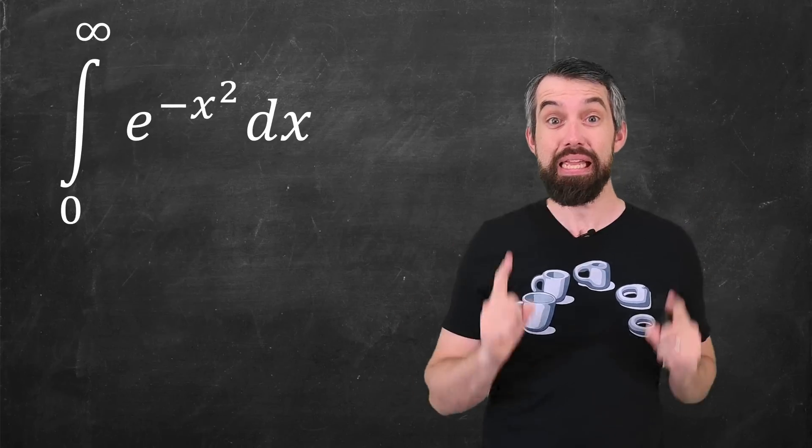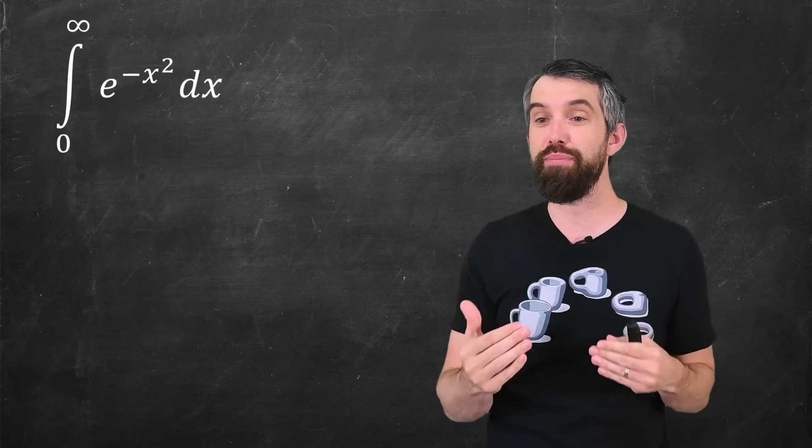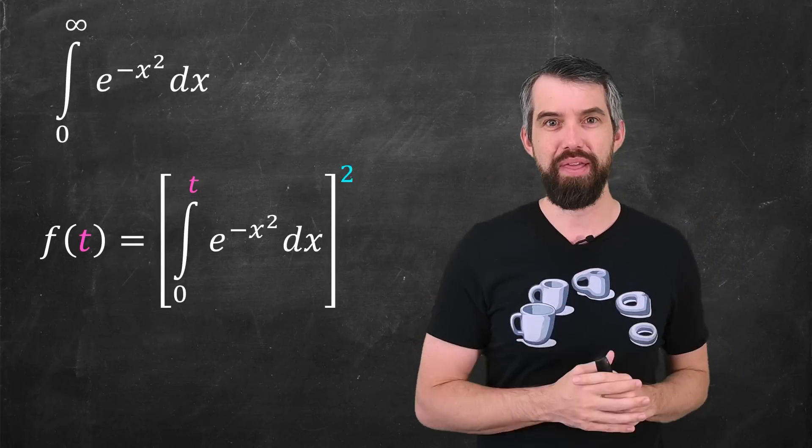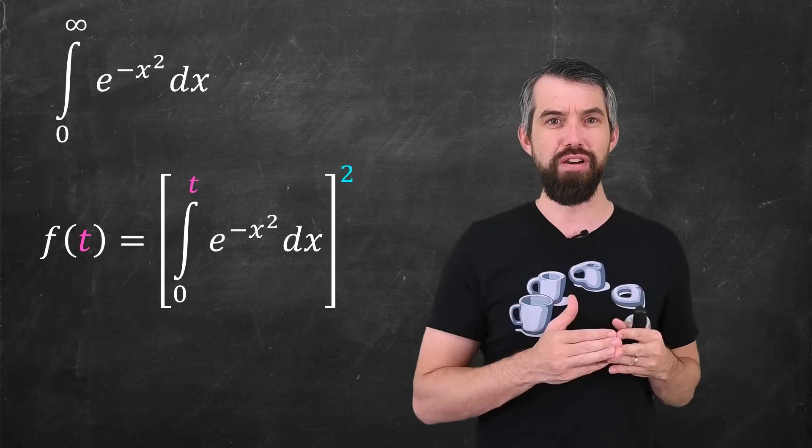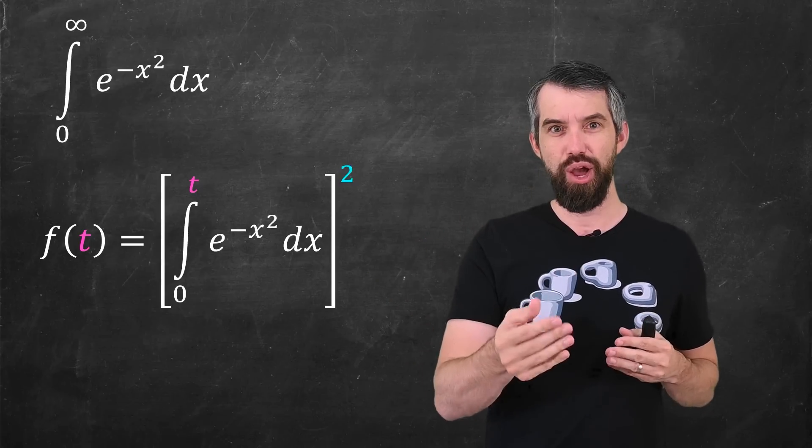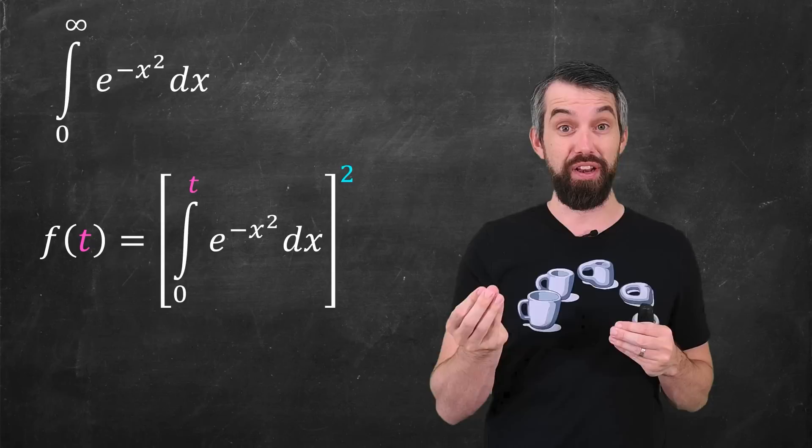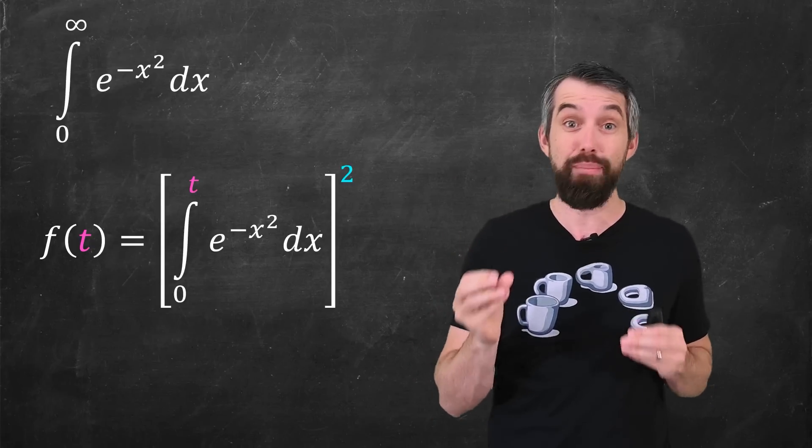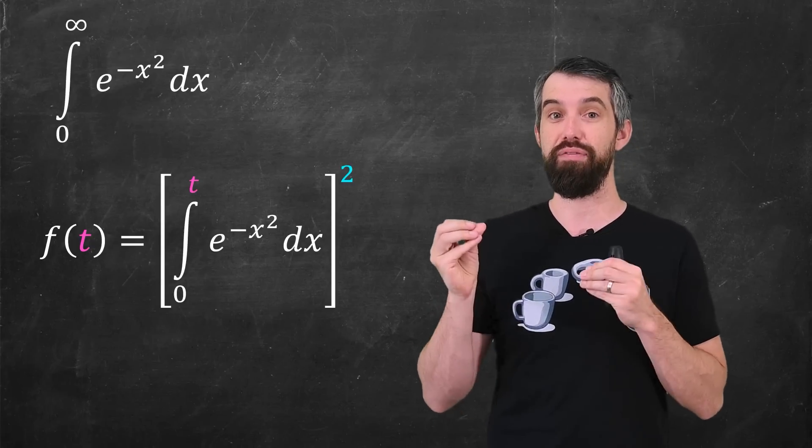The way my trick begins is to try and parameterize this integral. What I mean by that is I'm going to construct a function of t, f of t, where instead of going from 0 to infinity, I go from 0 to t. There's now this parameter t in the upper limit of the integral.